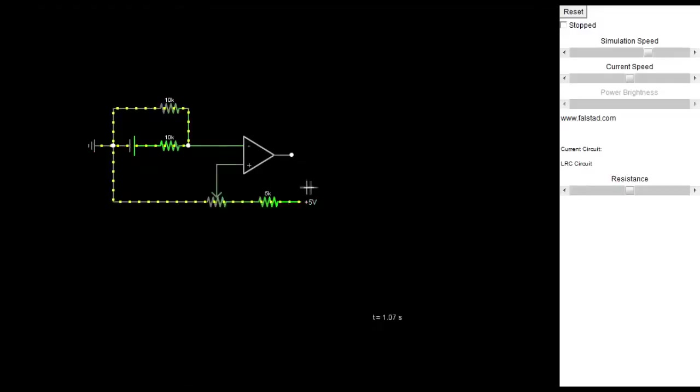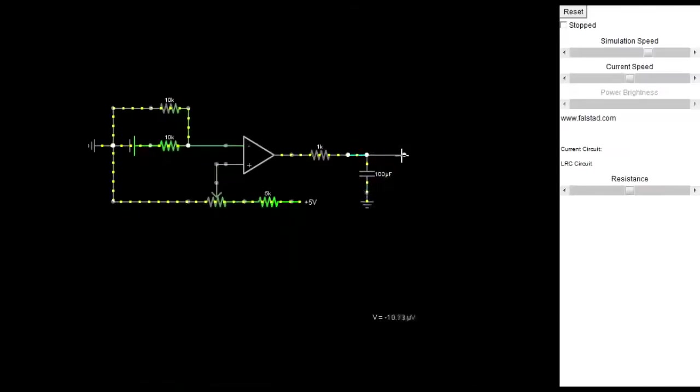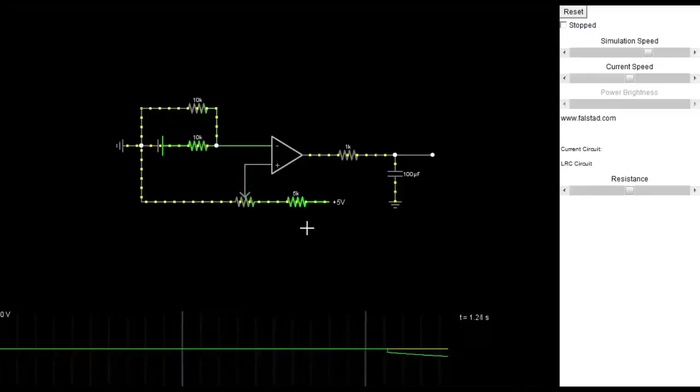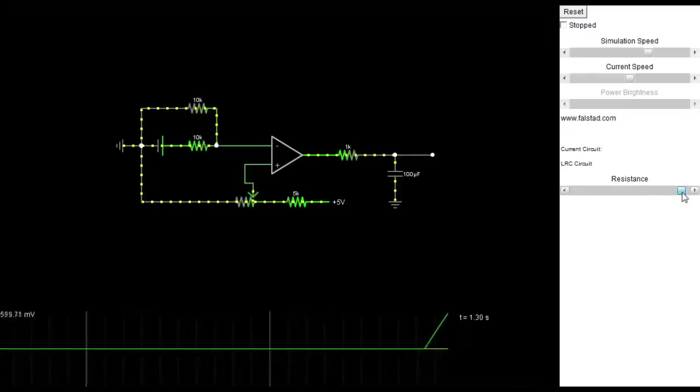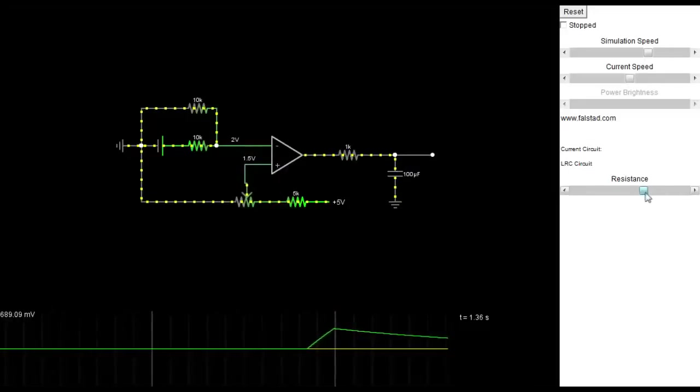On the output, I used a low pass filter consisting of a 1k ohm resistor and a 100 microfarad capacitor. The voltage reference sets the cutoff voltage of the charger.